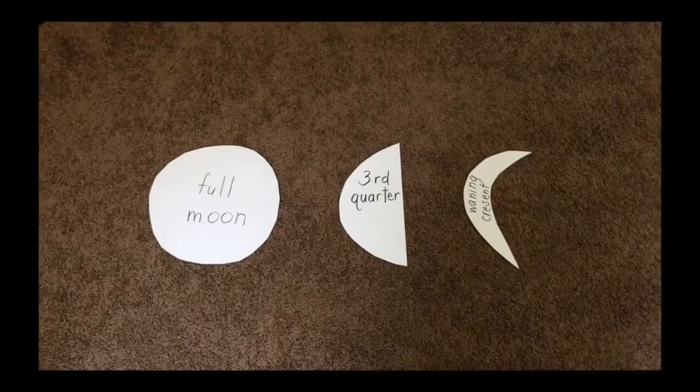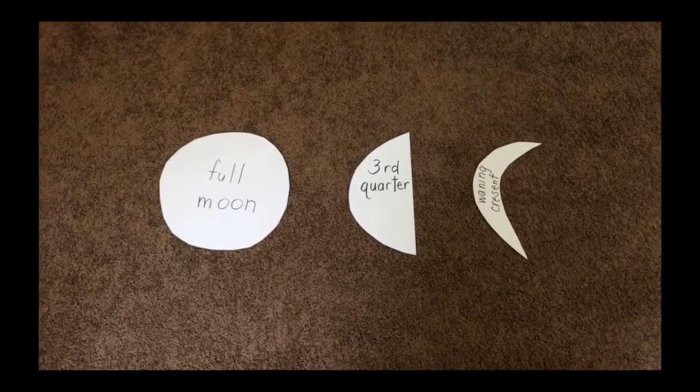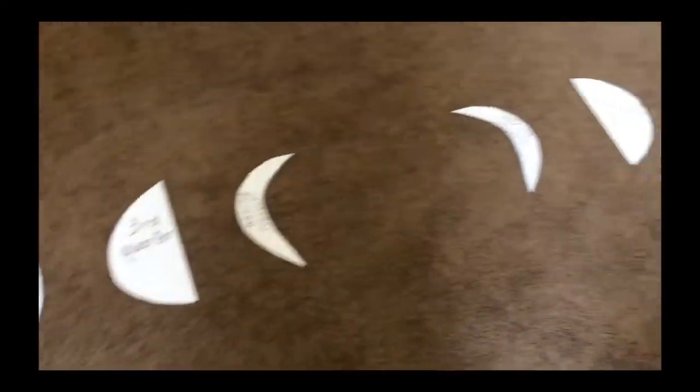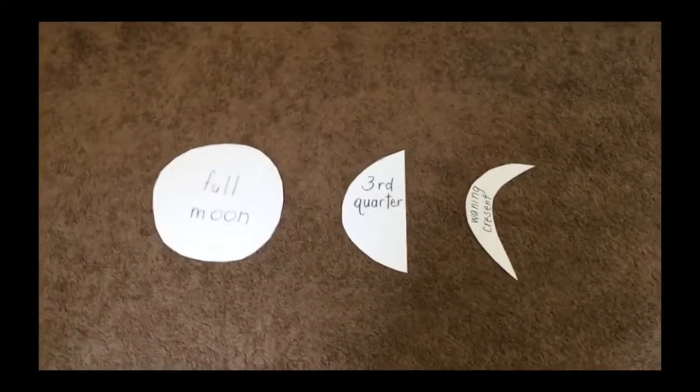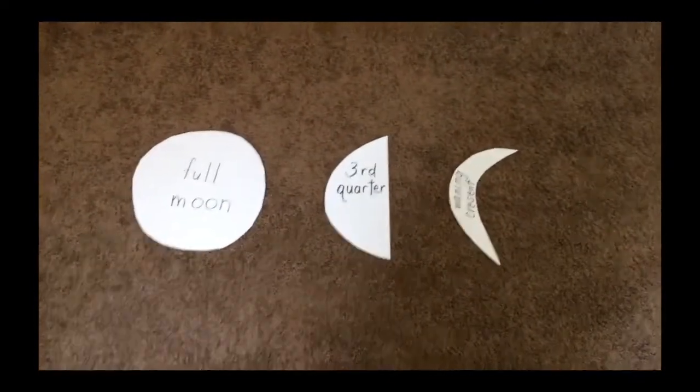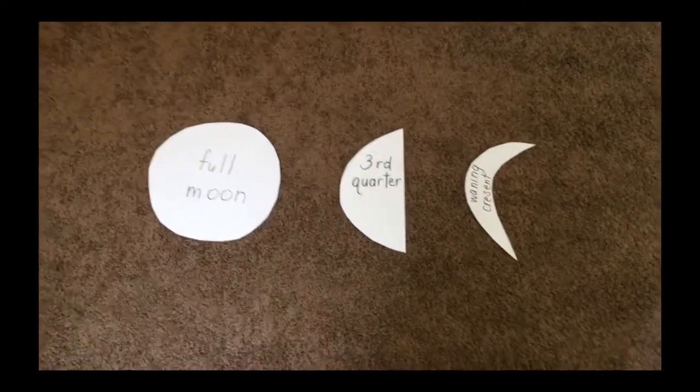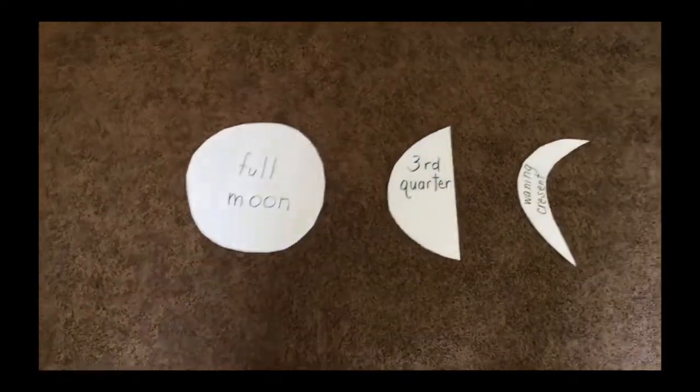Some other great activities are making the moon phases out of paper or chalk. I made the moon and all its phases out of computer paper. But if you want something sturdier, you could use paper plates. Those would be great. Or you could go outside and make all these phases with chalk.